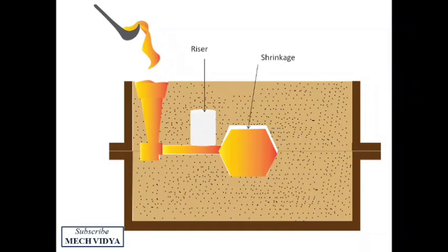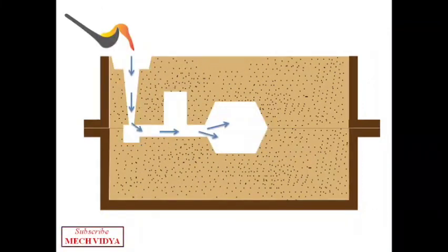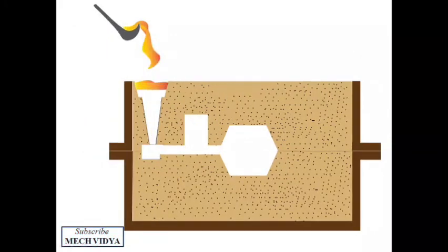This is a riser. Let us now see how it works when you pour the molten metal. First, it fills the mold cavity through the gating system. Once the mold cavity gets filled up, the riser gets filled up with the molten metal. This animation will help you to understand this more clearly.